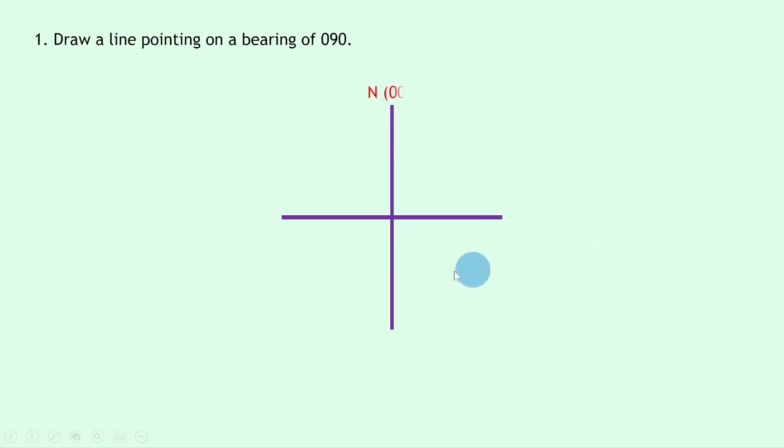Here we've got north which is 000, we've got east which is the same as 090, we've got south which is the same as 180, and we've got west which is the same as 270. If I draw a line on a bearing of 090, that's going to go from the middle all the way along in the east direction, so that would look like this where this angle here is 90 degrees.